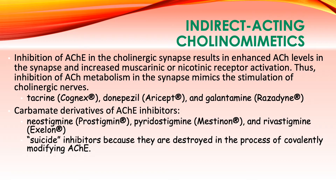That is why it is categorized as cholinomimetic — it can still stimulate cholinergic nerves through indirect acting, via inhibition of acetylcholinesterase, the enzyme that degrades acetylcholine. These drugs include tacrine, donepezil, and galantamine. We also have carbamate derivatives as acetylcholinesterase inhibitors, which are indirect acting cholinomimetics: neostigmine, pyridostigmine, and rivastigmine. They are referred to as suicide inhibitors because they are destroyed in the process of covalently modifying acetylcholinesterase.